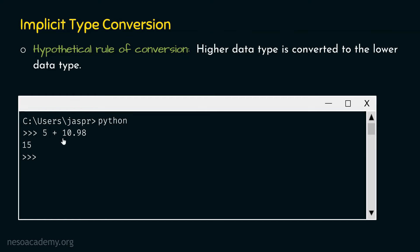Under the hypothetical rule, the floating point value 10.98 would be converted to integer 10, and therefore we would get 15 as a result. But Python never does this, because if Python followed this rule we would lose precision — the .98 from 10.98 would be lost. So Python never follows a higher-to-lower conversion rule.